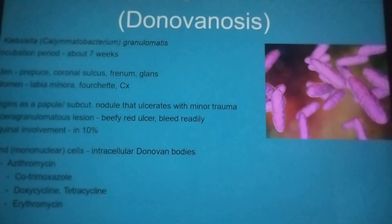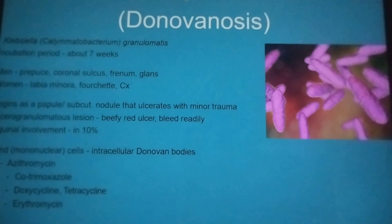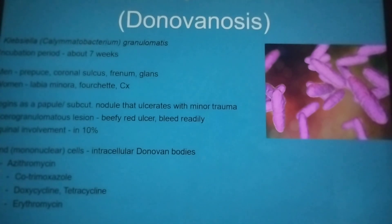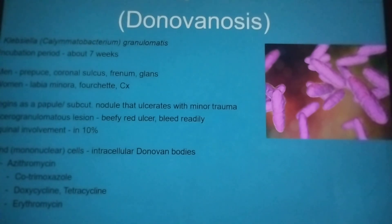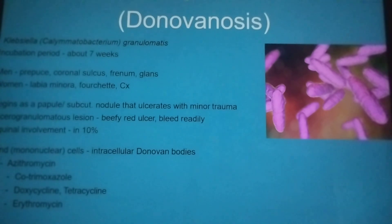While in the women, it causes infection in the labia minora, fourchette, and your cervix. It begins as a papule or a subcutaneous nodule that coincides with minor trauma. This causes a beefy red ulcer that bleeds easily, and it has inguinal involvement in 10% of the cases. You have the same treatment as your chancroid, which is azithromycin.